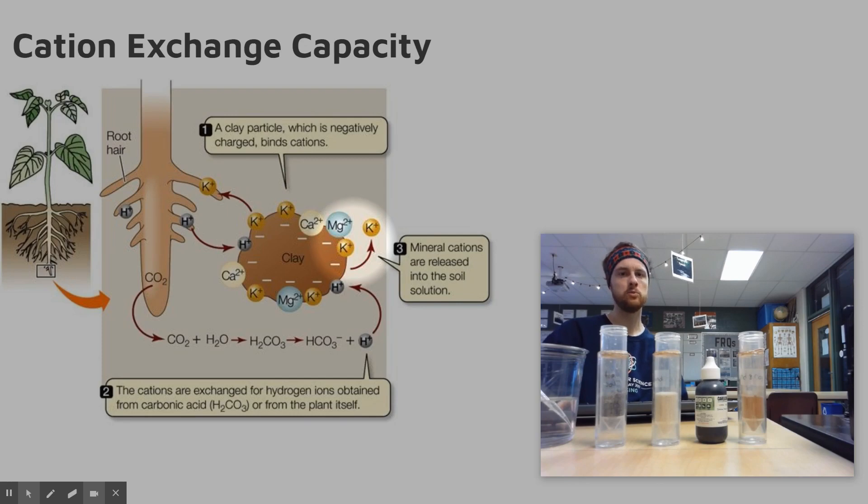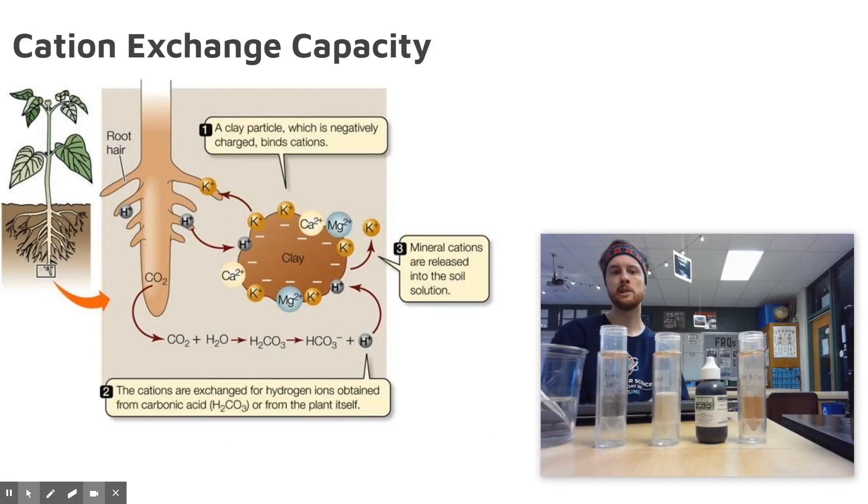You can also explain that a soil with a really low pH is going to have a really high concentration of H+ ions surrounding these clay particles and these other negatively charged particles. Those H+ ions basically bind to this clay and bump off or displace these positively charged nutrients, which can then leach out of the soil.